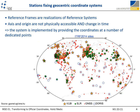Coordinate systems are basically a set of rules and conventions, so they do not exist in physical reality. For example, axes and origins are not physically accessible and they can change over time. To overcome this problem, we use reference frames, which are basically the realization of the reference systems in reality. Reference frames are realized or defined by a set of physical points with precisely determined coordinates in a specific coordinate system, helping us to fix the coordinate system in space.